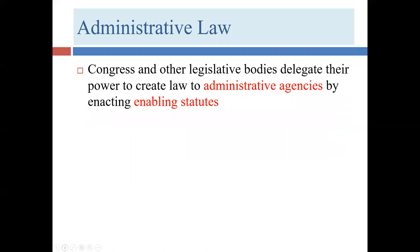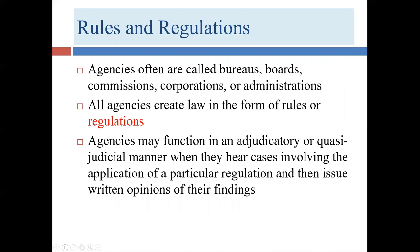How do regulatory agencies come into existence? What is required is that the legislative branch — Congress at the federal level, or the equivalent in the Texas Senate and House — develops the idea that we need a new administrative or regulatory agency. They create what are called enabling statutes. Those statutes need to become law, and once they do, the agency can come into existence. The enabling statute gives that agency its marching orders: what it can do, what it can't do, what it has to do.